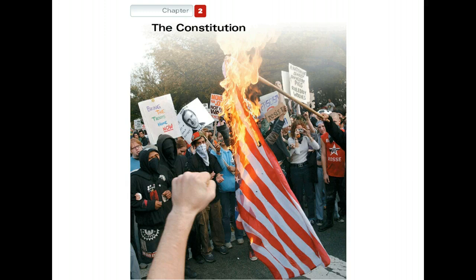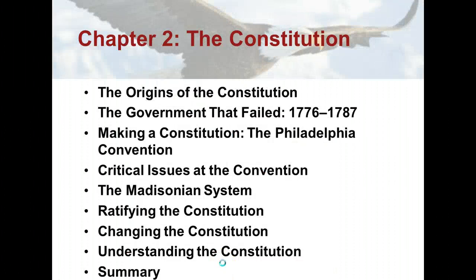Our objectives today are that we're going to learn the ideas behind the American Revolution and how those ideas shaped the Constitution. We're going to identify the causes and the failures of the Articles of Confederation. We're going to describe the delegates to the Constitutional Convention and the core ideas they shared. We're going to identify three types of issues the delegates confronted and how the Constitution resolved those issues. We're going to explain the Madisonian system and how it addressed the dilemma of reconciling majority rule with the protection of minority interests.